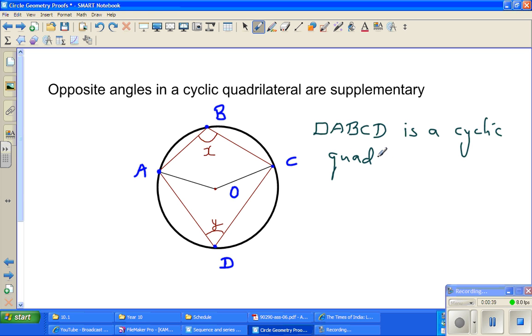Now, what is the result? The theorem states that the opposite angles of a cyclic quadrilateral are supplementary. Supplementary means they add up to 180 degrees. So, angle B and angle D are opposite angles of this cyclic quadrilateral. We want to prove that X plus Y will always be 180 degrees.